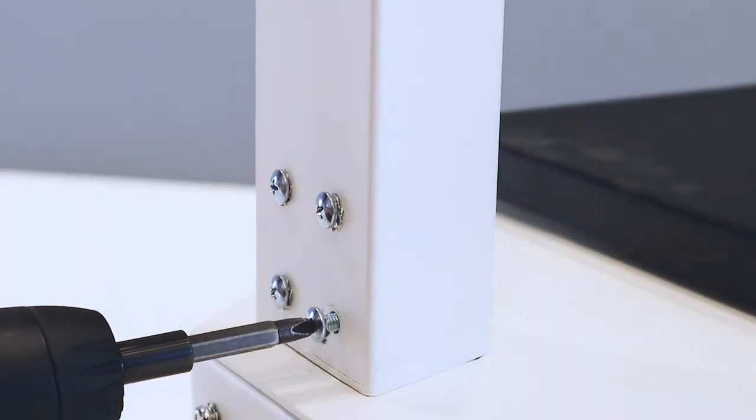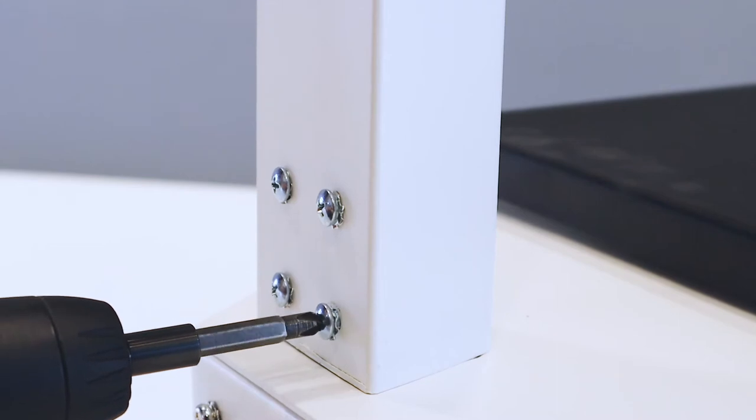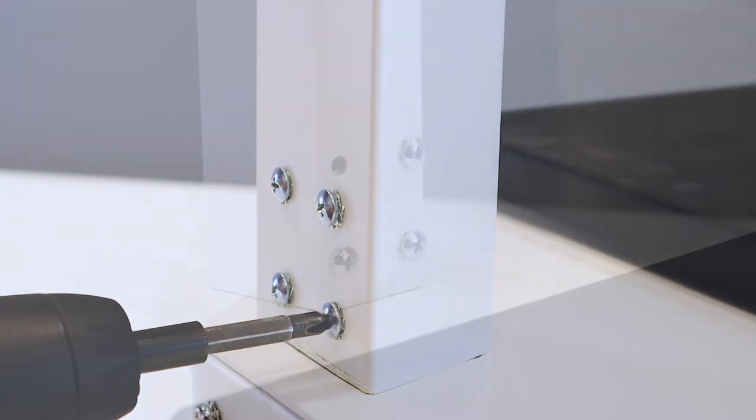Using a Phillips screwdriver, attach the column to the scale base with the eight screws and washers included in the hardware kit.